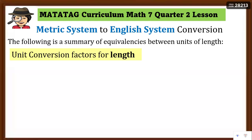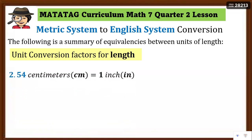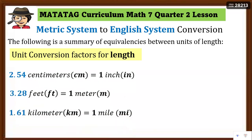Ano-ano ba yung mga unit conversion factors for land? Remember, land is the distance from end to end. Una: 2.54 centimeters is equal to one inch. Next: 3.28 feet is equal to one meter. And 1.61 kilometers is equal to one mile. Ito po ang mga conversion factors for land na nasa MATATAG curriculum for Grade 7.